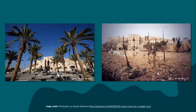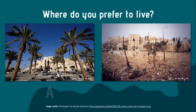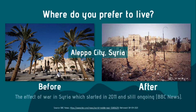On the screen, you can see two photos. I would like to ask a question: where do you prefer to live? Is it on A or in B? I'm sure you will choose the photo on option A. You might say that it looks nicer to live there based on its appearance. But what if I tell you that those two photos were taken on the same place and on the same spot? The photo on the right is actually the present look of a place located in Aleppo City, Syria. This is the effect of the ongoing war in Syria, which started in 2011. That means the war has been happening for 10 years now. Just imagine how much it affected the country. This situation is an example of a lack of peace and order.